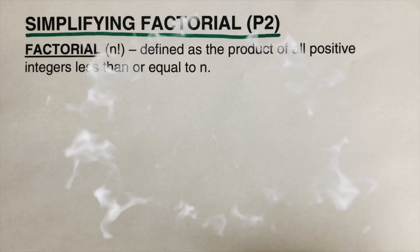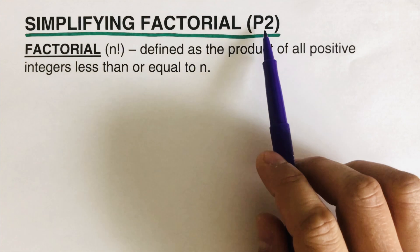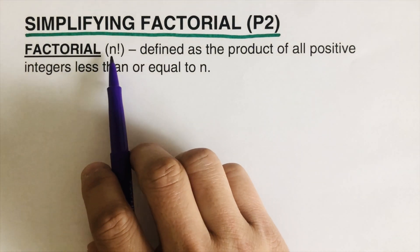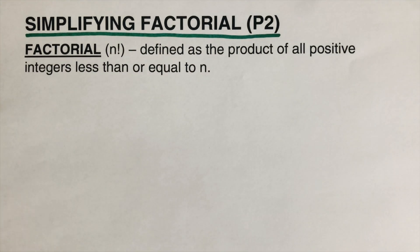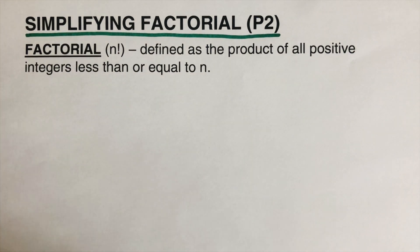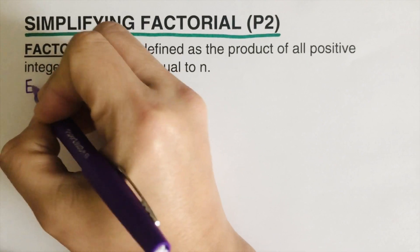Hello everyone, today we will be simplifying factorials. This is the second part — I will put the link to the first part in the description box below. Factorial is represented as n followed by an exclamation mark. In this part we are going to use variables, whereas in the first part those were all integers.